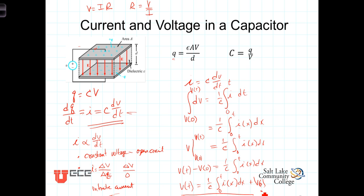We start at the initial voltage, and as current starts to flow we add up that charge divided by the capacitance — adding voltage, or if the current is negative, subtracting voltage — but the point is it starts at the initial value and we go from there. These two formulas, i equals C dV/dt and V defined by the integral expression, become the two formulas relating current and voltage in a capacitor.